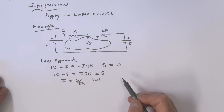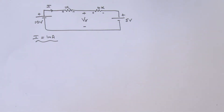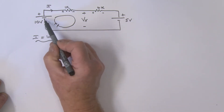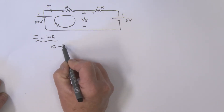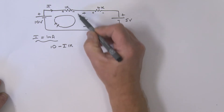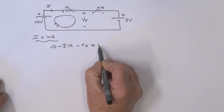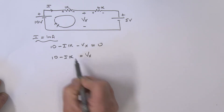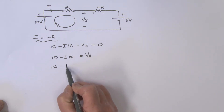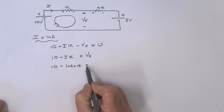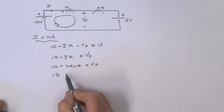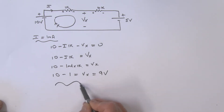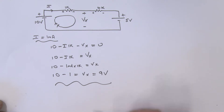Now we want Vx. I can apply Kirchhoff's Voltage Law again to find it. Taking a loop that now includes Vx: we have +10, then −i×1k, then −Vx, all equal to zero. Rearranging, Vx = 10 − i×1k = 10 − (1mA × 1k) = 10 − 1 = 9 volts. So that was a simple loop analysis giving us Vx = 9V.